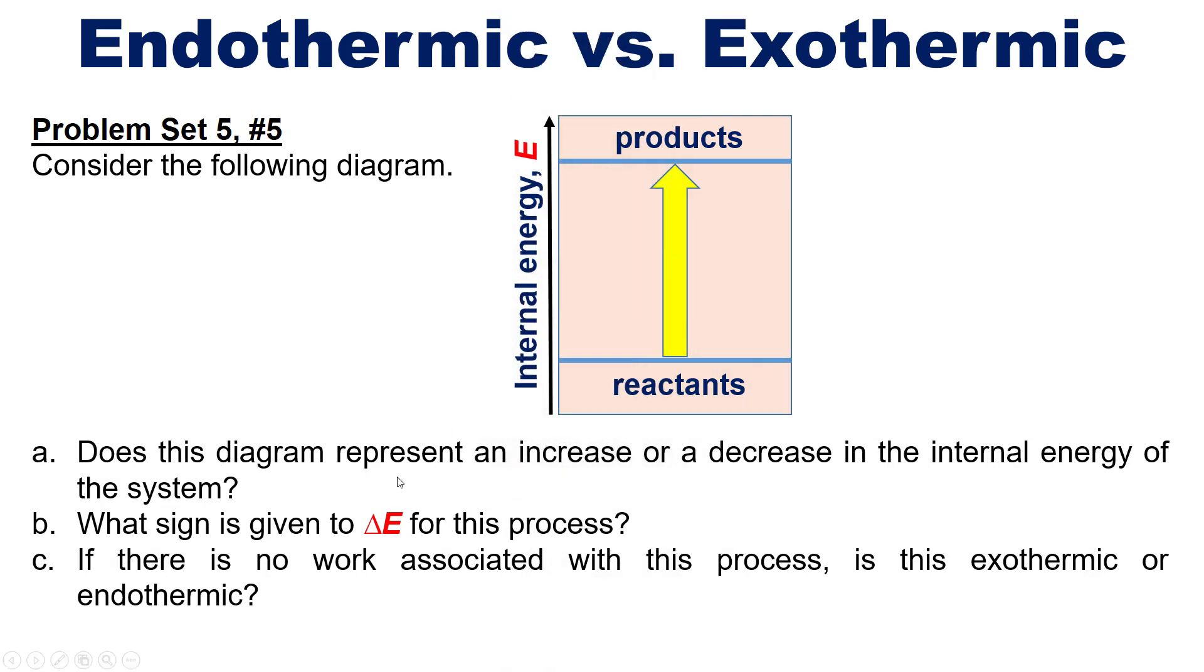All right, here's the answer. Letter A. Does the diagram represent an increase or decrease in the internal energy of the system? Well, the system is the reactants, undergoing a chemical reaction to convert to products. Because it's going uphill, it represents an increase, because uphill is an increase.